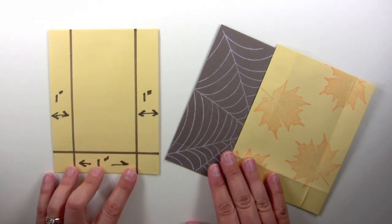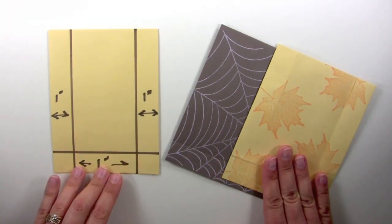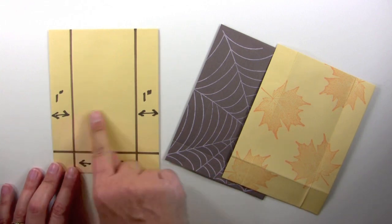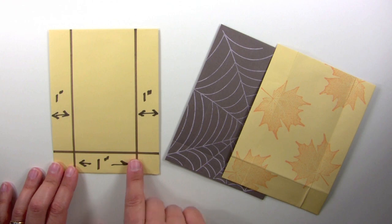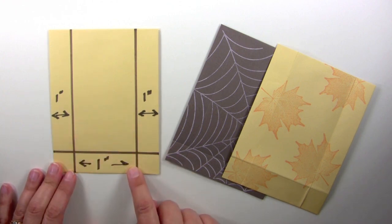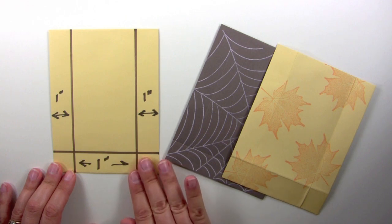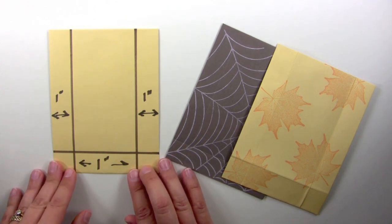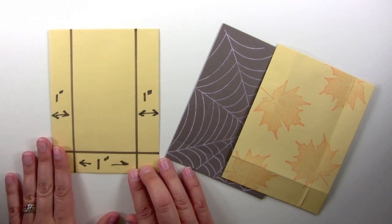So the next thing you're going to want to do is score your envelope to make the sides and the bottom of the gift bag. I drew lines on this one so that you could really see it's just an inch on the left and the right, and then an inch on the bottom. You can use a ruler and a bone folder for this, or you could use your favorite scoring tool like a score pal, whatever works best for you.